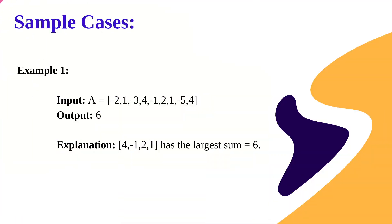Let's understand the problem statement with the help of an example. Suppose you are given an integer array with elements minus two, one, minus three, four, and so on. The output is six. Various subarrays are possible — even a single number is a subarray. For instance, minus two and one sum to minus one, these two elements sum to minus two, four and minus one sum to three, and so on.